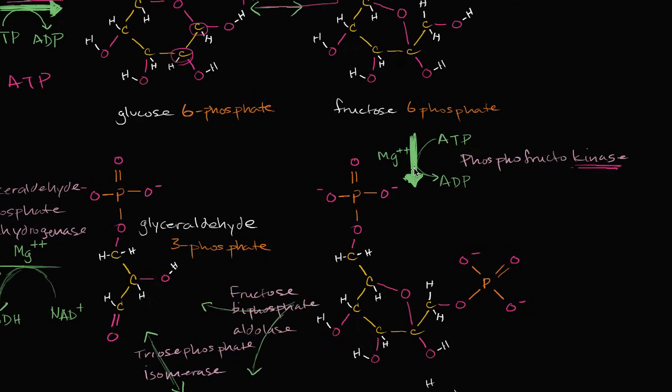We're going to attach another phosphate group to the fructose 6-phosphate. And now you have two of these phosphate groups. So this hydrogen right over here is now replaced with another phosphate group.